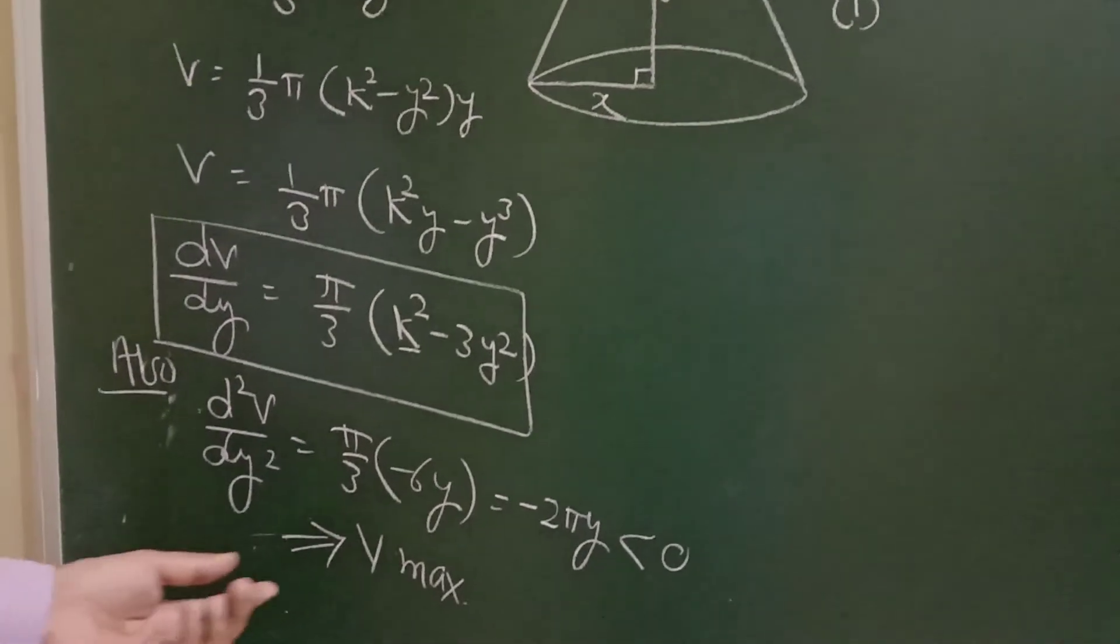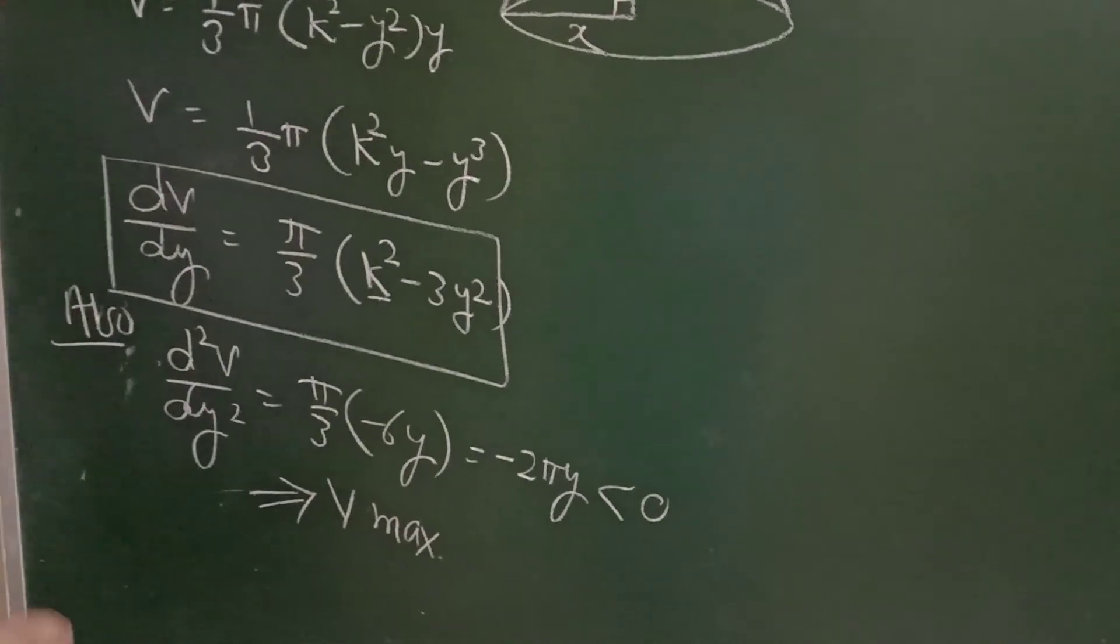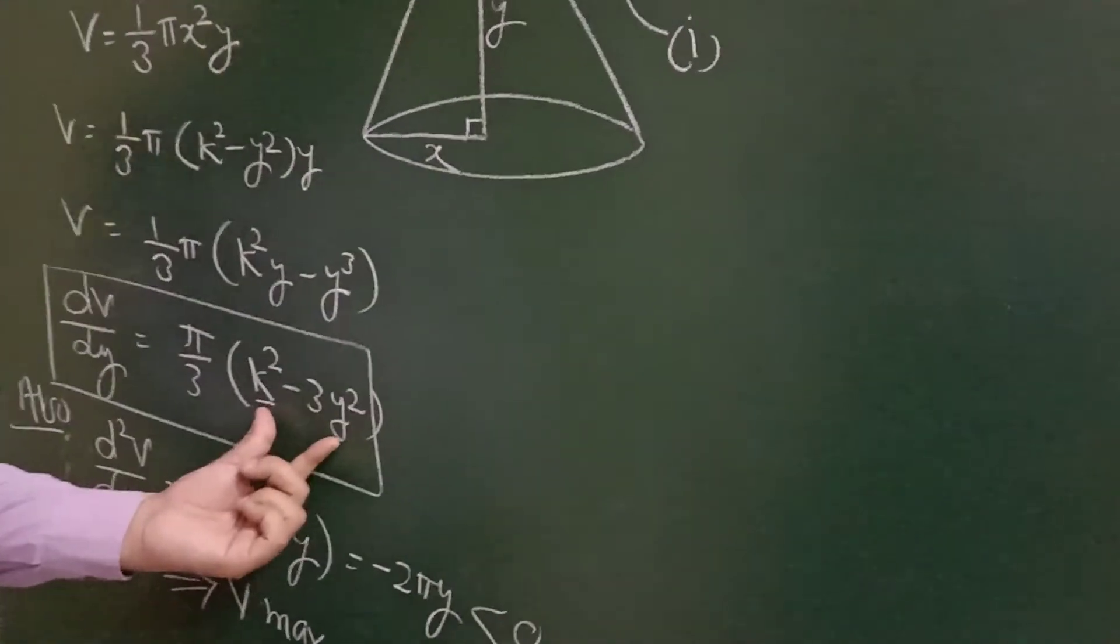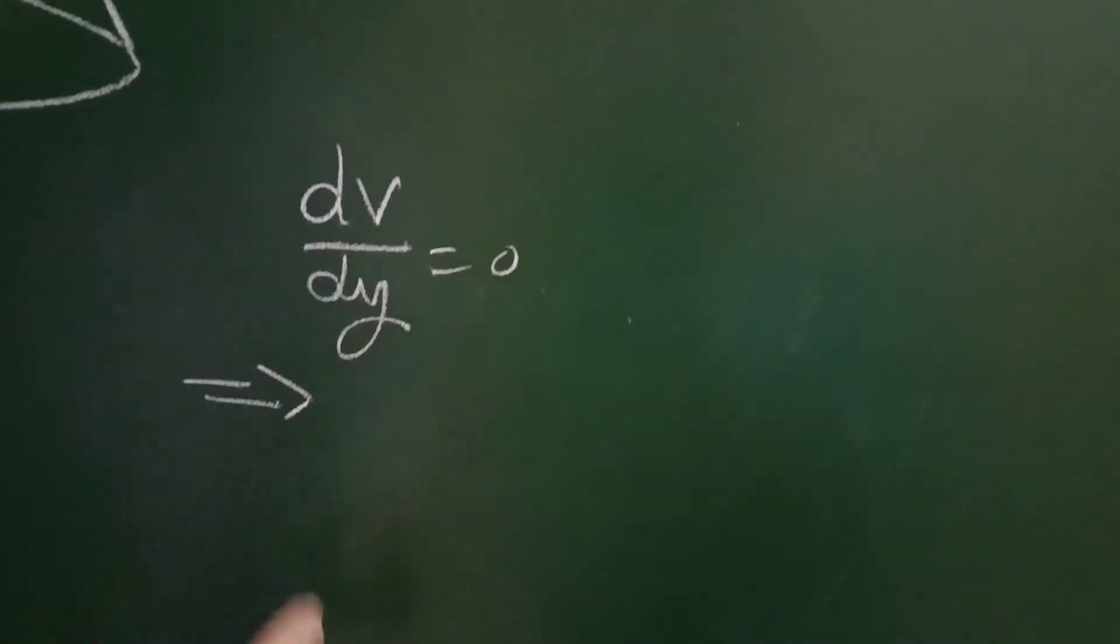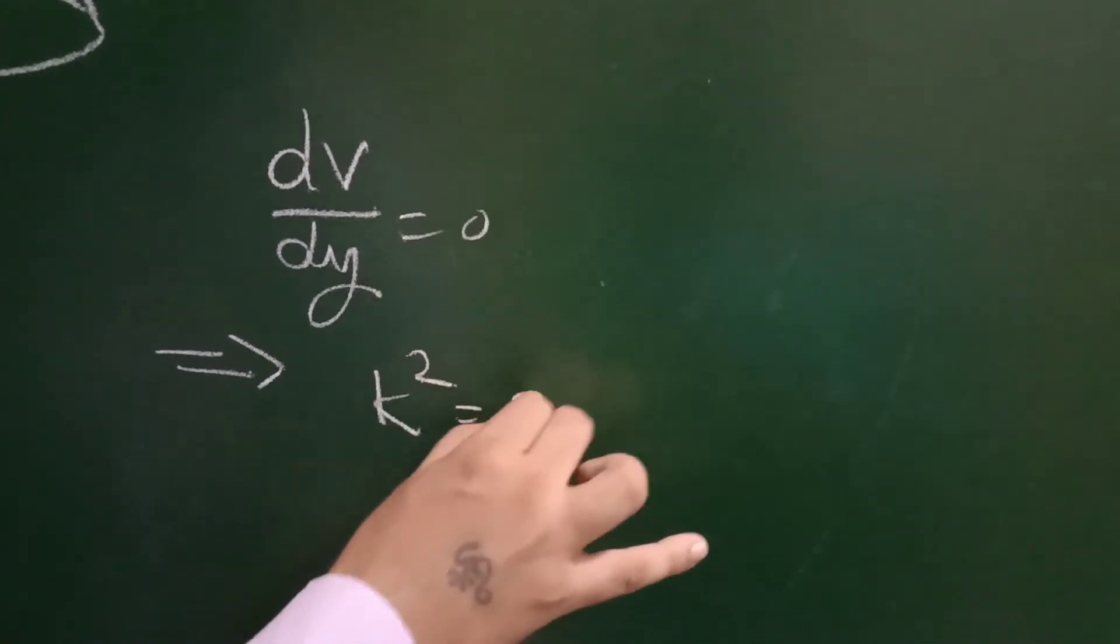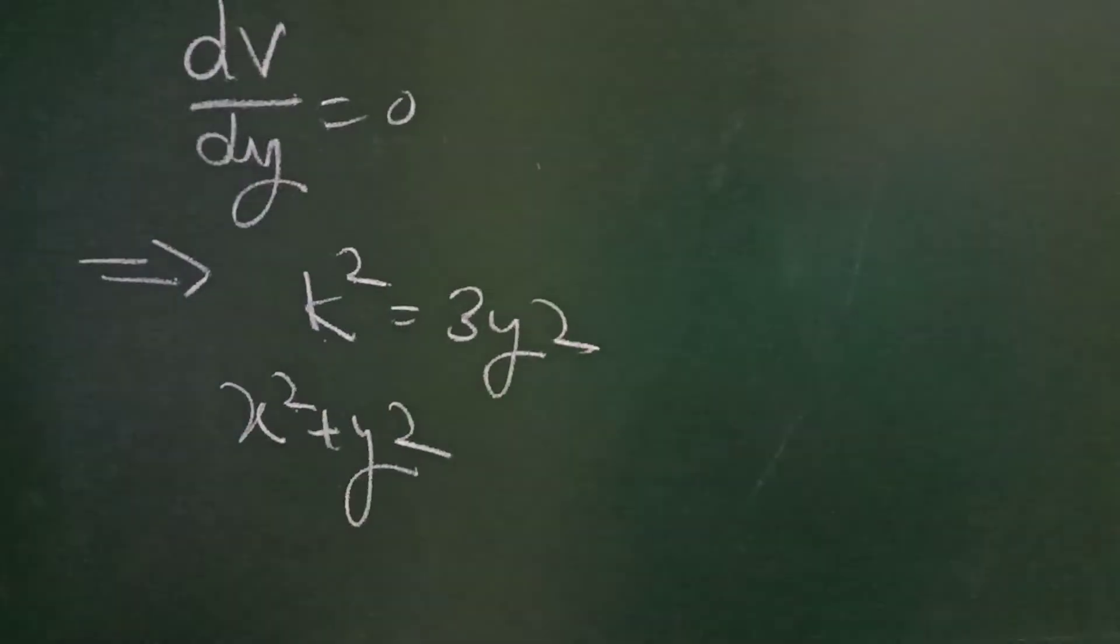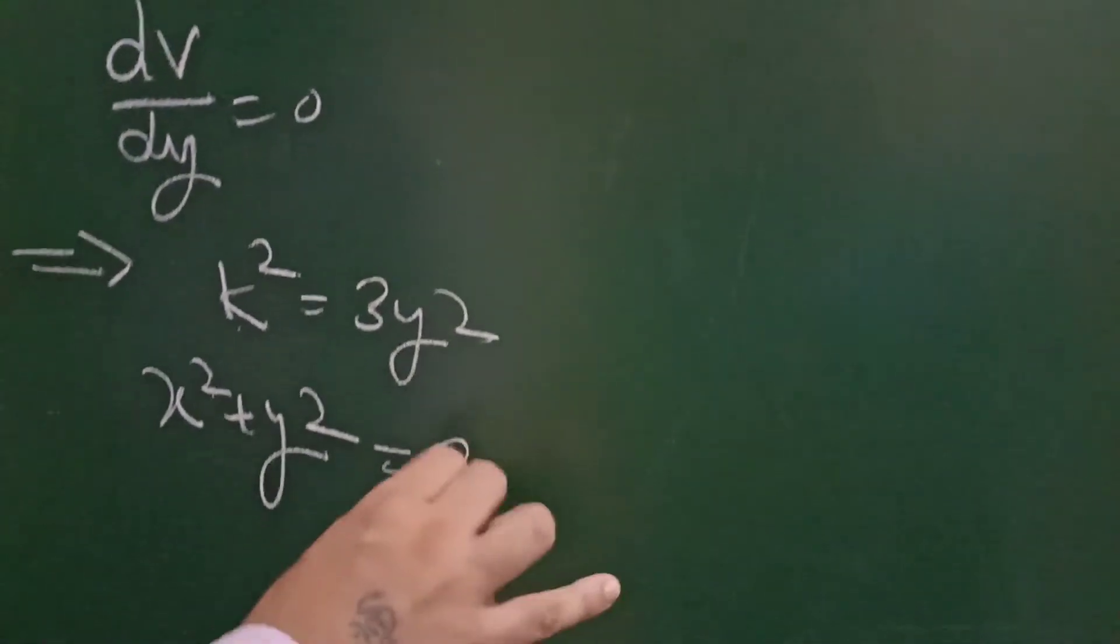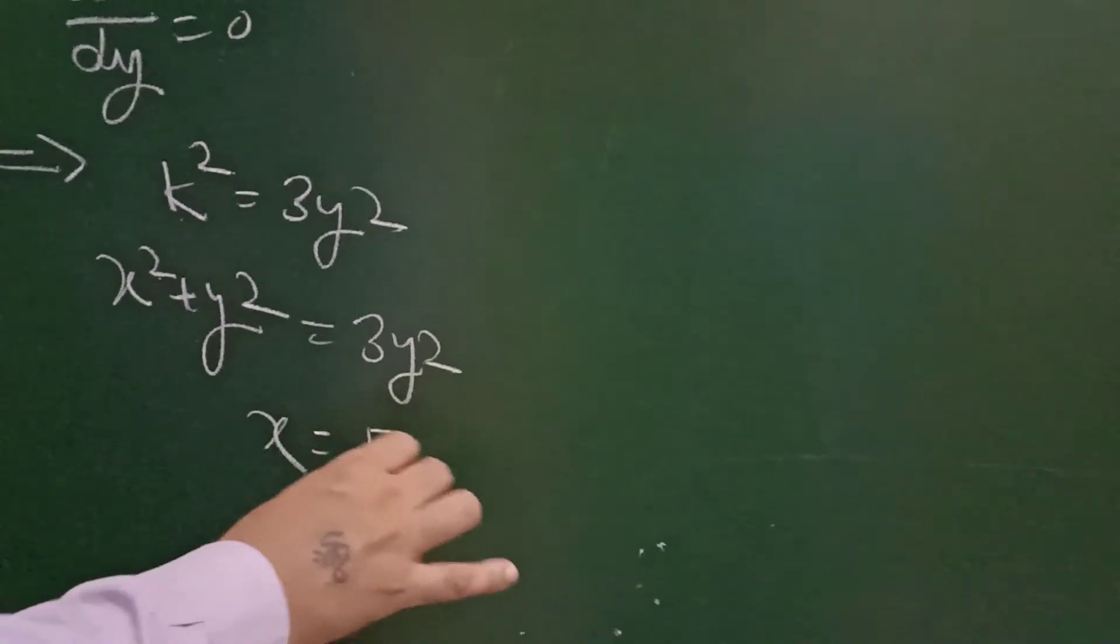So in order to maximize the volume, substitute dV/dy = 0. You will get k² = 3y². Now k² equals x² + y² from equation 1, which equals 3y². From here you will get x = √2·y.